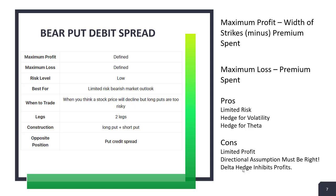Both the call and put debit spreads will show profit kind of equally depending on how the stock moves, but when a stock moves down it usually moves down pretty quickly compared to moving up. The old rule: stocks take the escalator up and they take the elevator shaft going down. So put debit spreads can profit a little bit faster.